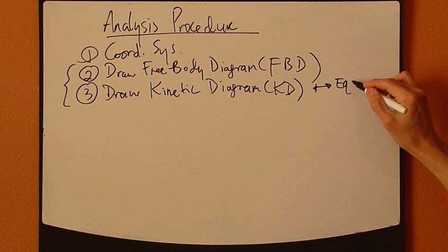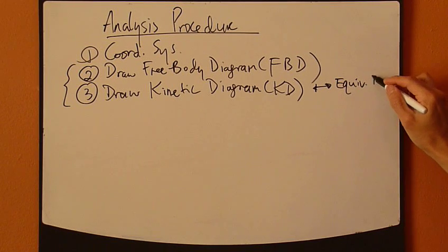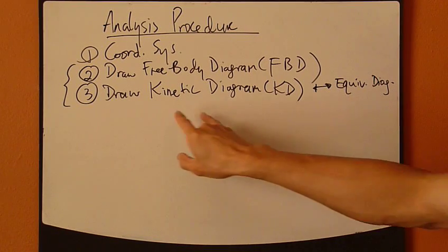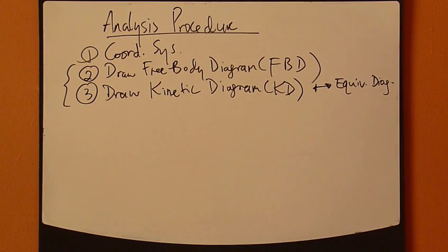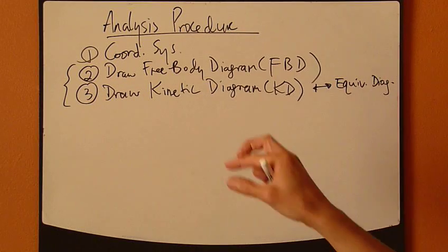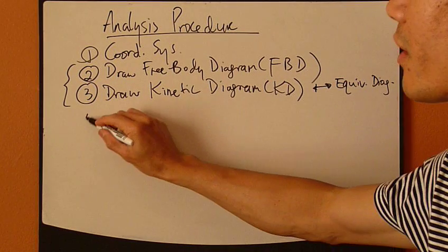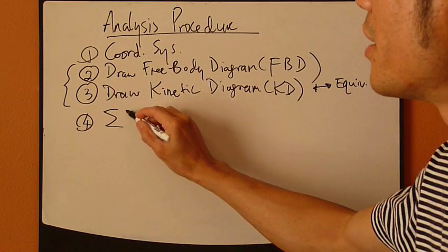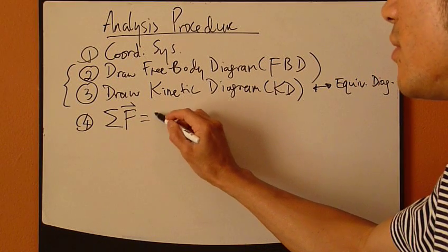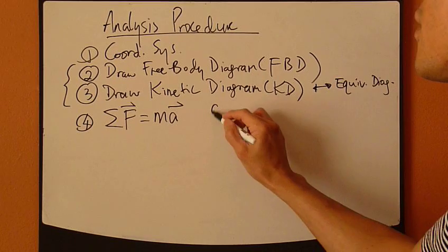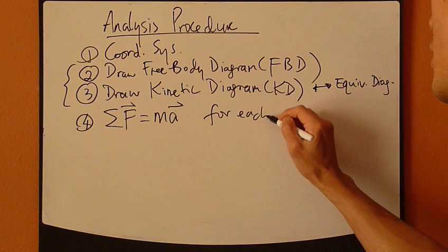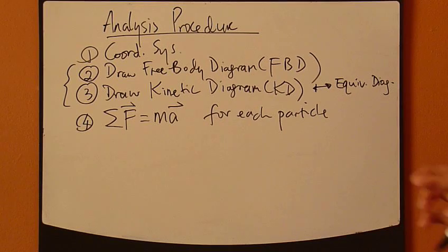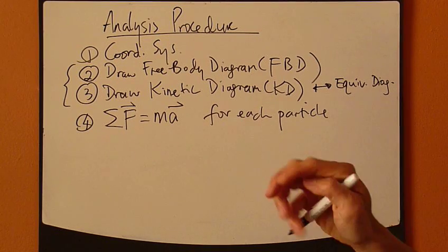Sometimes, we also call it equivalent diagram. So equivalent or kinetic diagram would mean the same thing. Now, you do step two and three together, side by side. Next step, the most important step of all, we apply Newton's Second Law for each particle. If you have more than one particle, then apply this for each particle.